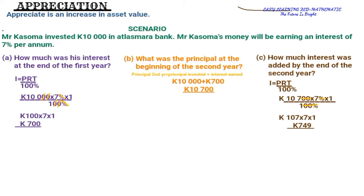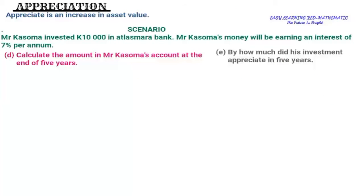Those were the answers the examiners were expecting. There are two more questions — D and E — which I didn't write earlier due to space. For Question D — calculate the amount in Mr. Kasoma's account at the end of five years — I'm going to draw a table to work through this.